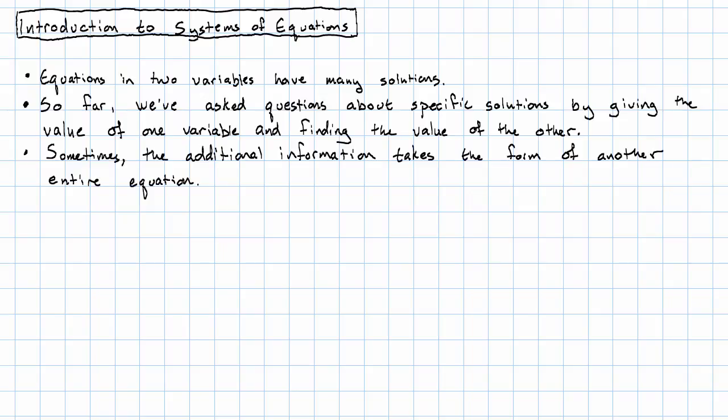So for example, let's say we have these two equations. Suppose we know that 2x plus 3y is 13 and that y is 2x minus 1. This bracket here means that these equations are together. We want a solution that works in both equations.